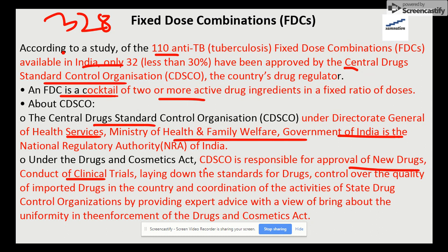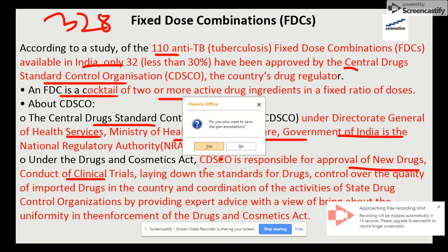Brands going off pharmacy shelves include Saridon and Texam AZ, according to market research from AIOCD Pharmatech. That ends this session on health part two. Let's move forward to health part three. Thank you and have a nice day.